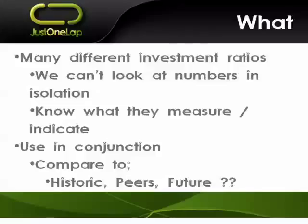It's important with investing that we can't look at numbers in isolation. If I tell you a company makes a million rand profit, that's meaningless without more context. Ratios take two numbers and link them together to get an outcome we can use across different companies. We need to understand what they're measuring and what they're indicating - what's good, what's bad - and then go beyond the number in isolation: comparing it to historic data for the company, future expectations, and peers in the same industry.